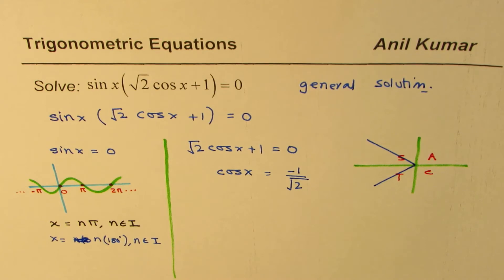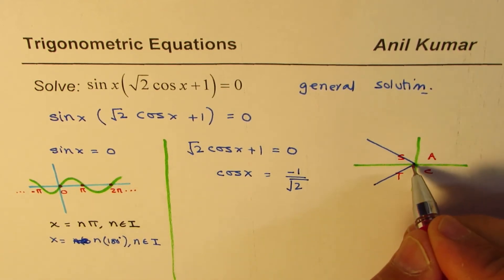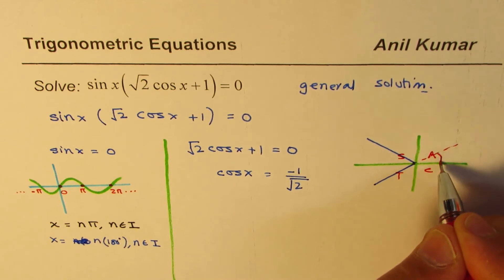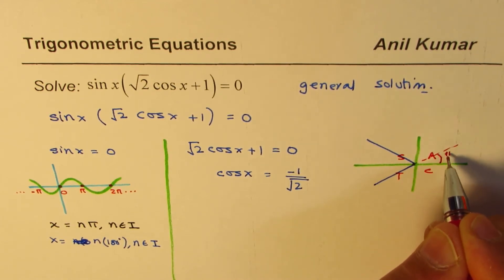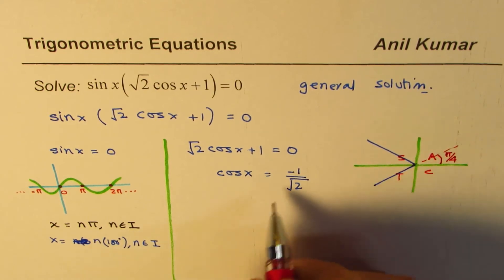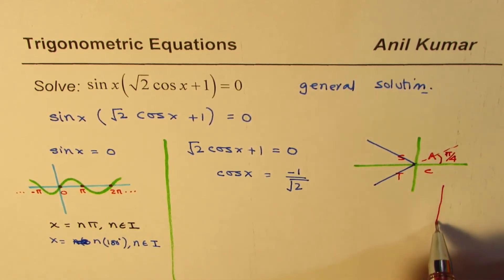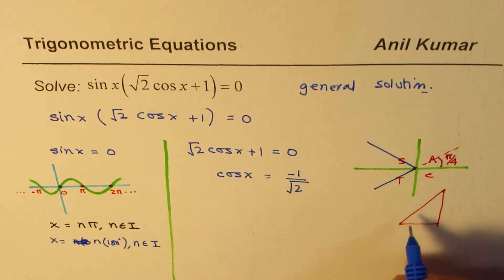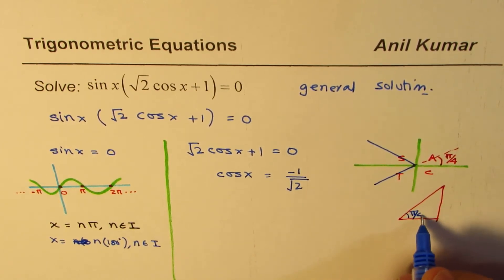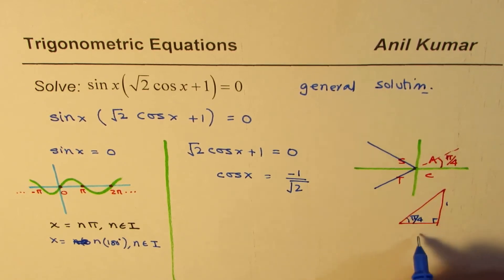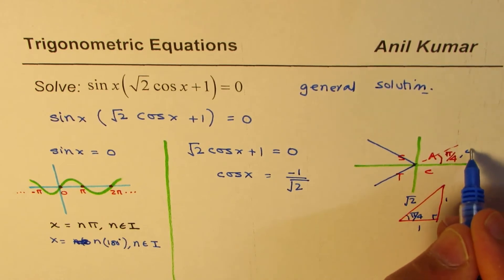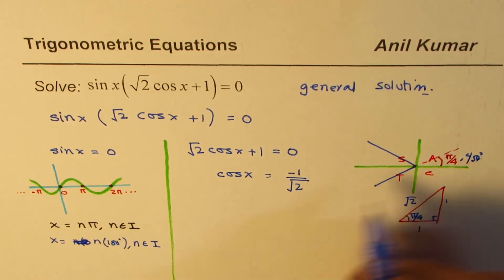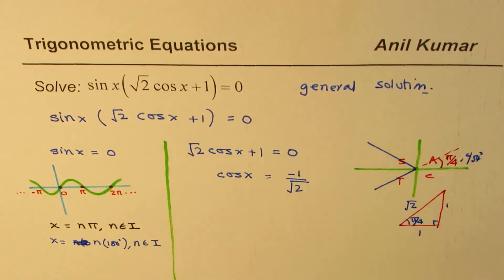So cos x is 1 over square root 2 positive in quadrant 1, where the acute angle is, if you write in radians, it is pi by 4. So if you look into a special triangle, which is kind of like this, where the angles are pi by 4, pi by 4, sides are 1, 1, square root 2. So for pi by 4 or 45 degrees, we get cos as positive 1 over square root 2.